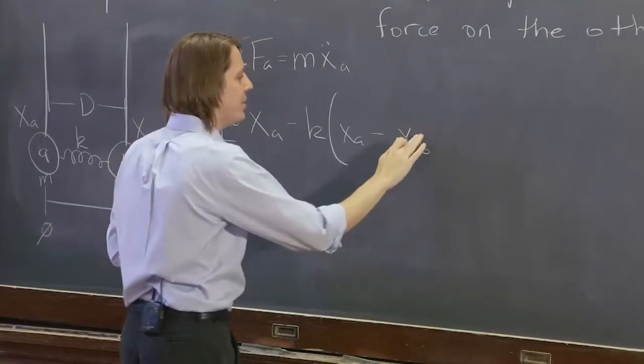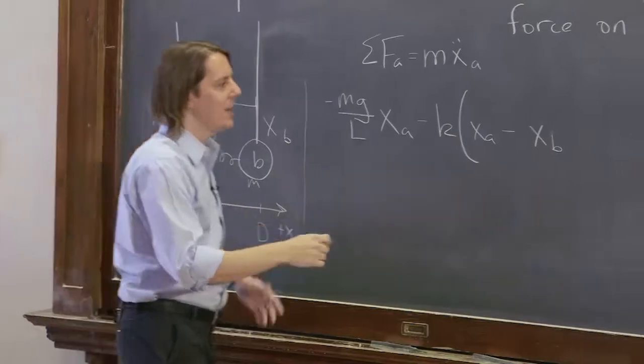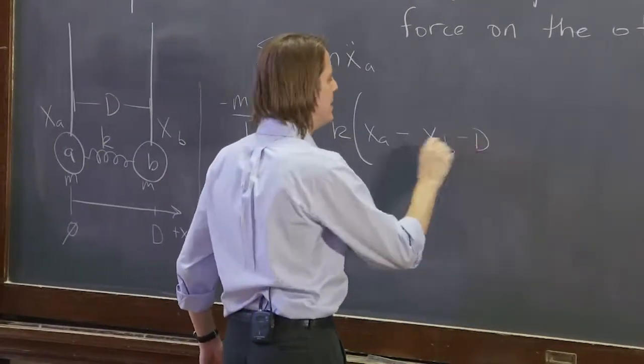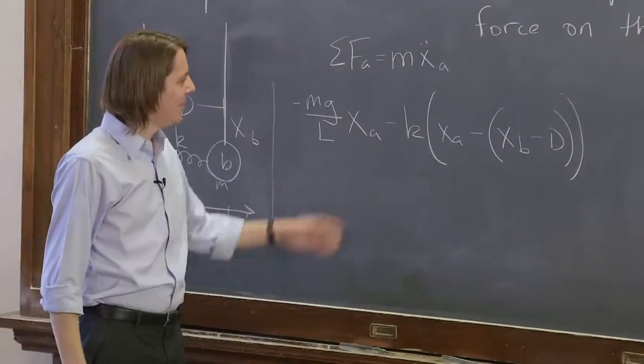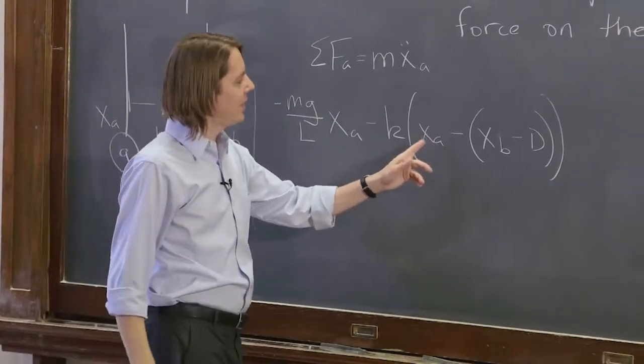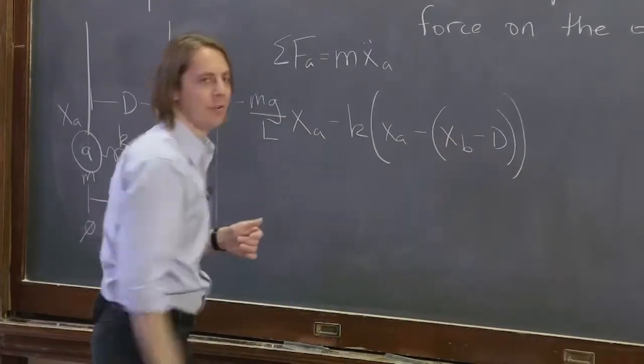But then there's another complication, is xB is always defined by deflections around D. So it's actually xB minus D. So that's all the negative signs and parentheses you have to keep up with. It's minus k times xA and essentially plus k times xB. But xB is always relative to D.